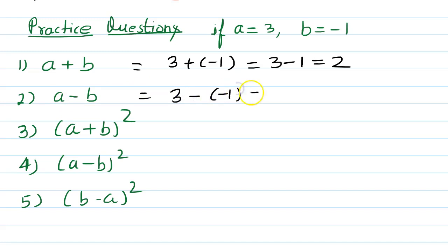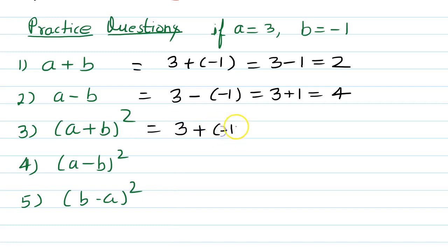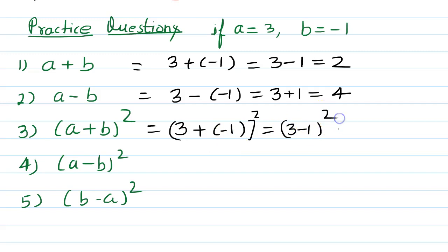Writing b in a bracket: minus and minus same sign becomes plus, so 3 plus 1 equals 4. Now (a plus b) whole square: a is 3, b is minus 1, so plus and minus becomes minus — giving (3 minus 1) squared. 3 minus 1 is 2, and 2 squared is 2 times 2, which equals 4.